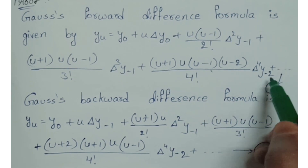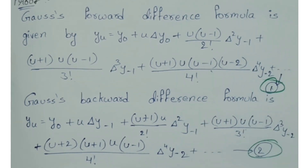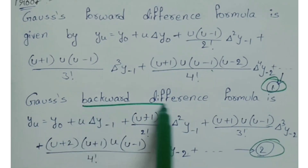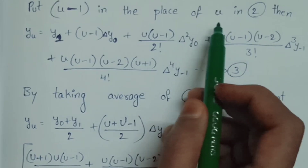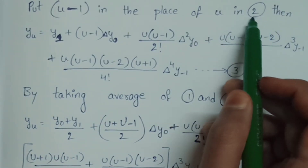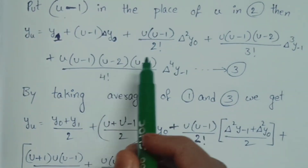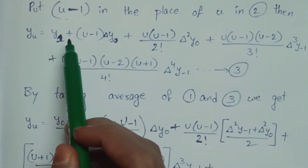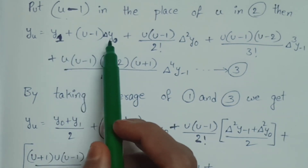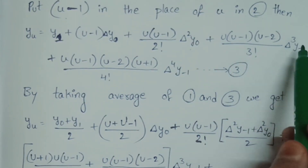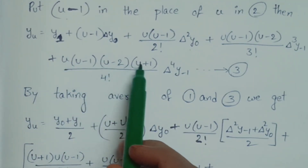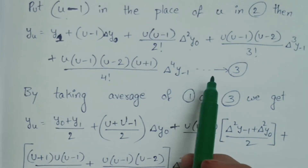Okay — Gauss forward is equation 1 and Gauss backward is equation 2, and we can derive Bessel's formula from these. We substitute u minus 1 in place of u in equation 2. Putting u minus 1 in place of u in equation 2, we get: y(u) equals y1 plus (u minus 1) delta y naught plus u(u minus 1)/2! delta squared y naught plus u(u minus 1)(u minus 2)/3! delta cubed y minus 1 plus u(u minus 1)(u minus 2)(u plus 1)/4! delta to the 4th y minus 1 and so on.